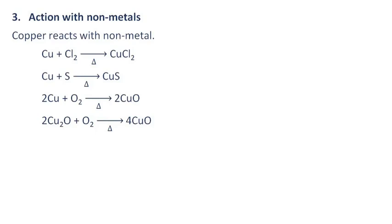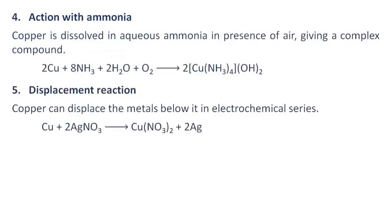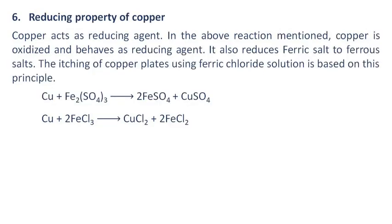Action with non-metals: Copper reacts with non-metals like chlorine, sulfur, and oxygen to form cupric chloride, copper sulfide, and copper oxide respectively, as shown in the reactions. Cuprous oxide also reacts with air to form copper oxide. Action with ammonia: Copper is dissolved in aqueous ammonia in presence of air, giving a complex compound as shown in the reaction. Displacement reaction: Copper can displace the metals below it in the electrochemical series. Reducing property: Copper acts as a reducing agent; it is oxidized in the above reactions and also reduces ferric salts to ferrous salts. The itching of copper plates using ferric chloride solution is based on this principle.